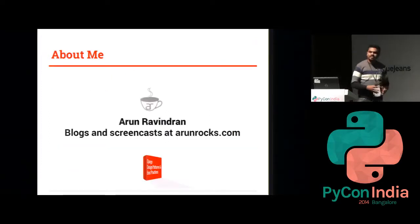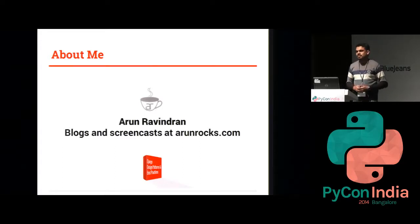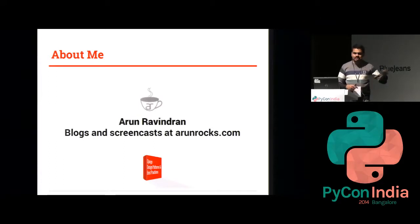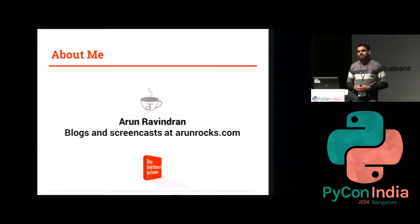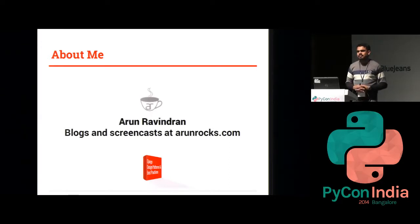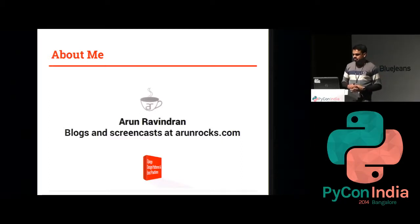My name is Arun Ravindran. I blog and have screencasts posted at arunrocks.com. I recently open-sourced a project called Edge, which is a project template for Django. I'm actually writing a book about Django design patterns and best practices. It will cover almost 40 to 50 design patterns and best practices covering Django 1.7 and will be published by PacketPub by the end of this year.